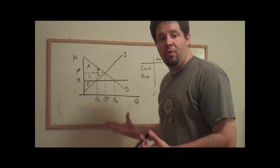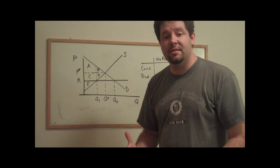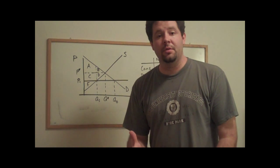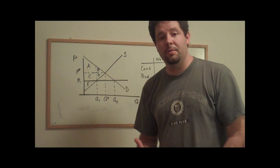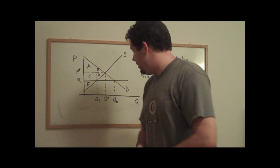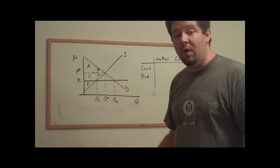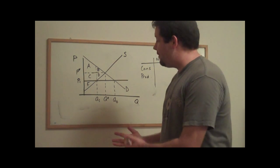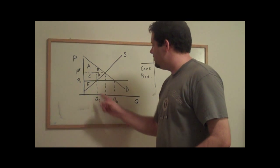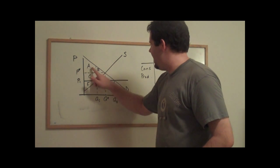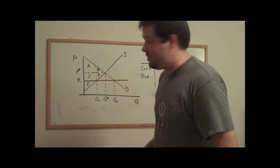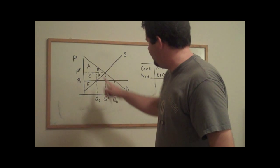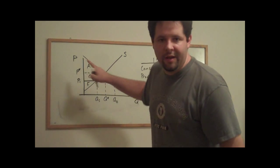Now that we understand that there is a shortage, let's consider what happens to consumer and producer surplus, what happens to total surplus, and what happens to deadweight loss. Let's think about the welfare implications in two steps: initially, and then after the price ceiling. Initially, the consumer surplus was area A plus B, and producer surplus was E plus C plus D. That means the total surplus is this big triangle here.